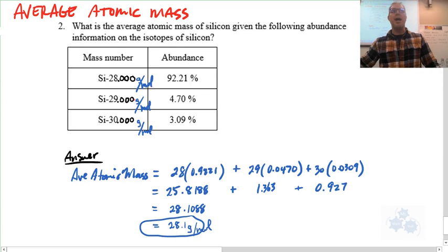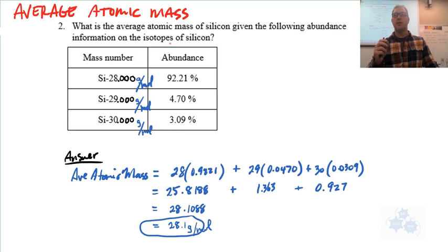All right, so in calculating average atomic mass, everyone, there's two things you need to take into account. You need to take into account the individual masses of the isotopes of an element.